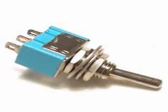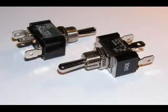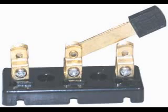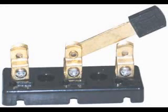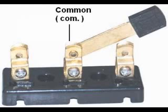A very common configuration for toggle switches is single pole double throw, or SPDT. It has three connection terminals and is electrically equivalent to a single pole double throw knife switch. This is the schematic diagram symbol for a single pole double throw toggle switch. Like the single pole double throw knife switch, it has a center terminal that can be connected to either one of the other two terminals. The center terminal is called the common terminal.